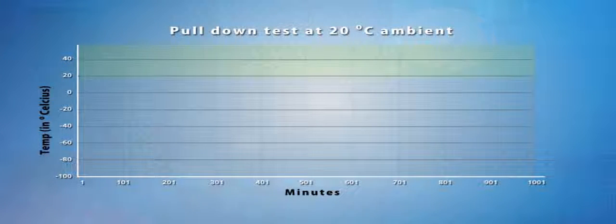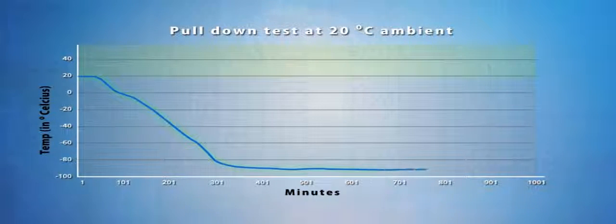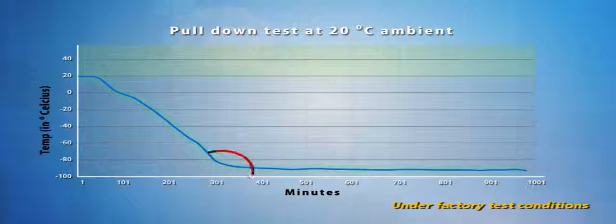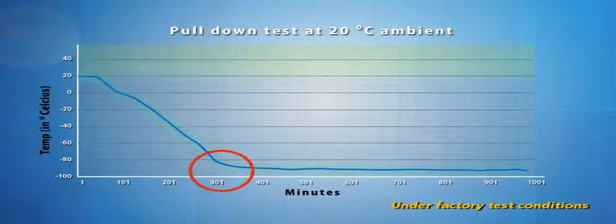Pull down time is the temperature required to lower the temperature of the ULT freezer from ambient to the set temperature. Esco ULT freezer can achieve 306 minutes pull down time from 20 degrees Celsius to minus 80 degrees Celsius under factory test conditions.